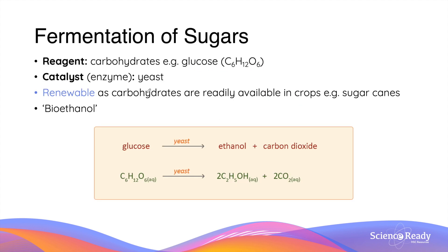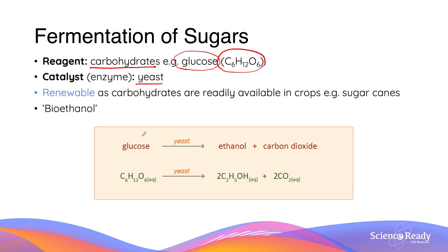The third method of producing alcohols is fermentation. The reactant required is usually carbohydrates, namely glucose, if we want to produce ethanol. Glucose has a formula of C6H12O6. Fermentation of glucose requires a catalyst or enzyme found in yeast. When yeast is added to glucose under the right reaction conditions, it can break down glucose into two molecules of ethanol and two molecules of carbon dioxide.